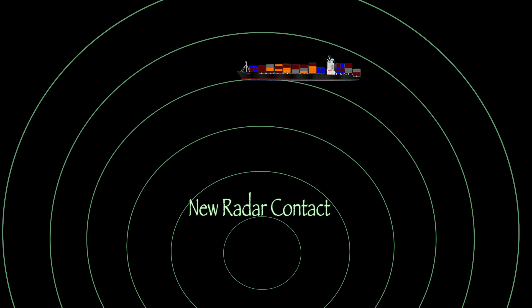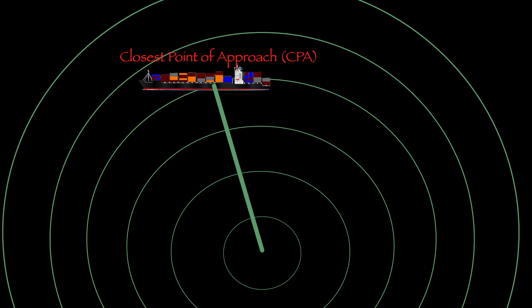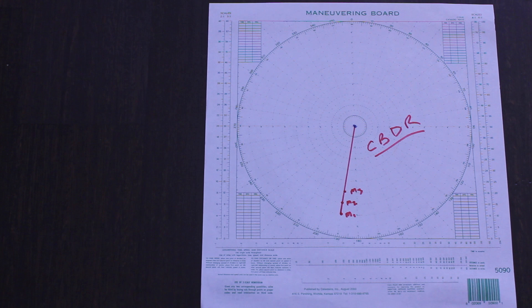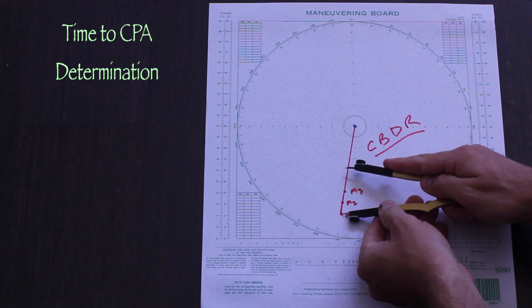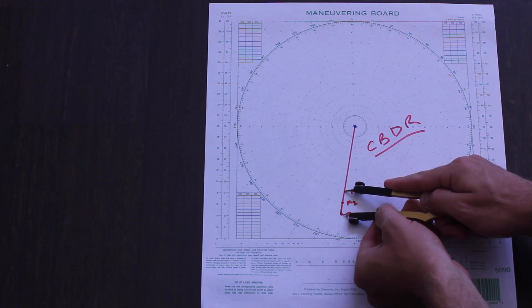What is closest point of approach? It's simply the closest that a contact gets to you in the center of the maneuvering board. It has a bearing, a range, and a time. Let's start with the contact from the last episode. Obviously the CPA range is 0 and the bearing is 190, but let's calculate the CPA time.